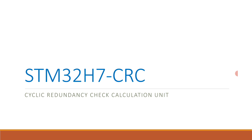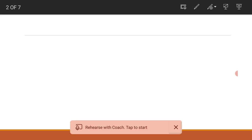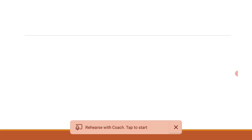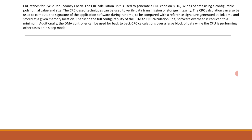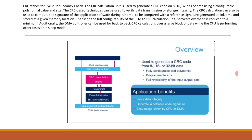The CRC calculation unit is used to generate a CRC code on 8, 16, or 32 bits of data using a configurable polynomial value and size. The CRC-based technique can be used to verify data transmission or storage integrity. The CRC calculation can also be used for the signature of application software during runtime.